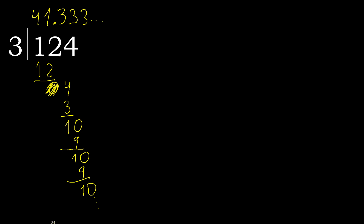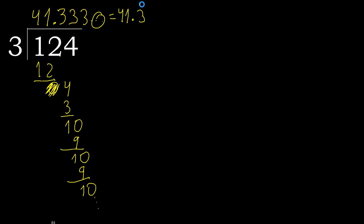124 divided by 3 is 41, and after the decimal point, 3 repeating. Therefore the answer is 41.3̄ — repeat like this.